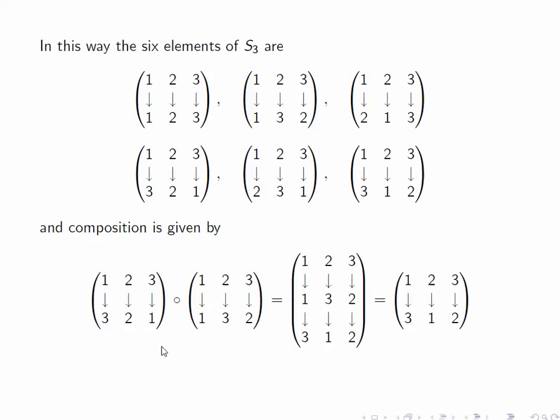If we're going to compose two such permutations, then we can put the first permutation on the top and then list what happens to the resulting elements using the second permutation. So for instance here, the second permutation sends 1 to 3, sends 2 to 2, and 3 to 1. The resulting composition is then just the total action from top to bottom. So it sends 1 to 3, 2 to 1, and 3 to 2.